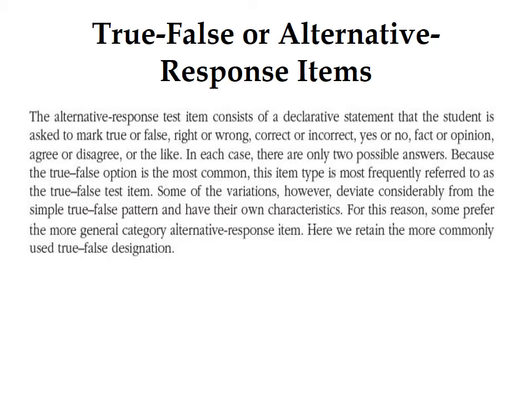The next topic is true-false or alternative response items, which is the second type of objective test item. The alternative response test item consists of a declarative statement that the student is asked to mark as true or false, right or wrong, correct or incorrect, yes or no, or agree or disagree. In each case, there are only two possible answers. Because the true-false option is most commonly used, this item type is most frequently referred to as the true-false test item.